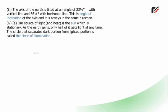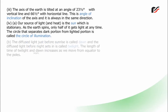Our source of light and heat is the Sun, which is stationary. As the Earth spins, only half of it gets light at any time. The circle that separates the dark portion from the lighted portion is called the circle of illumination.